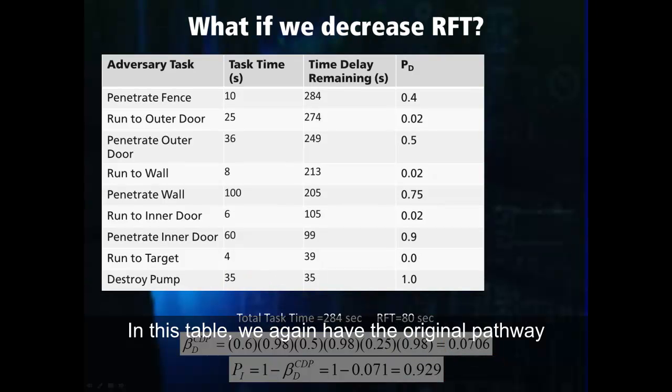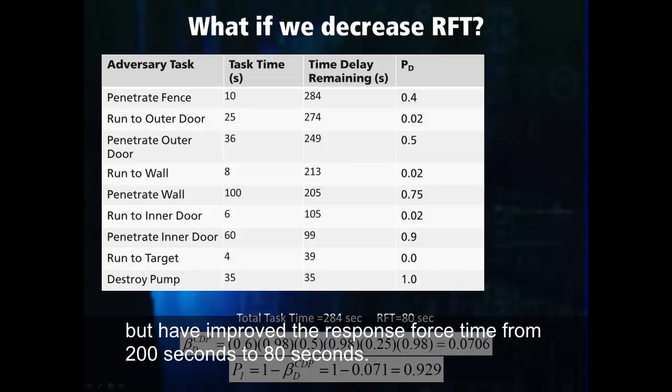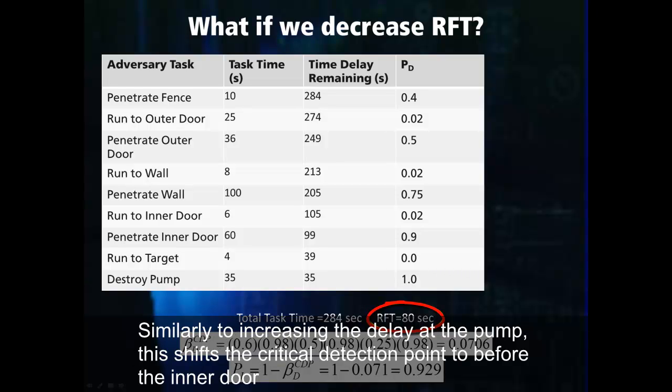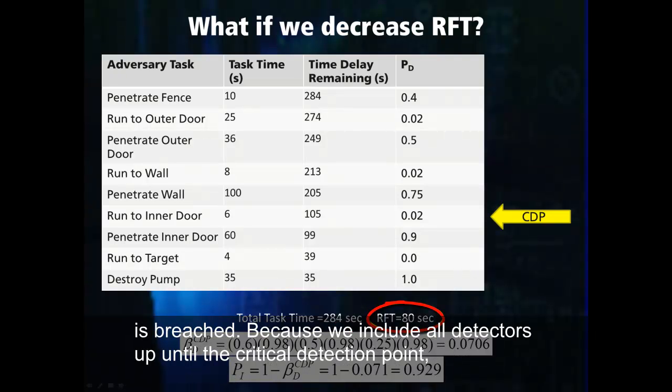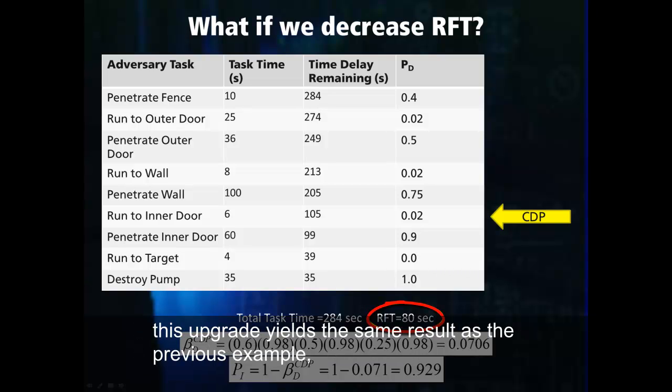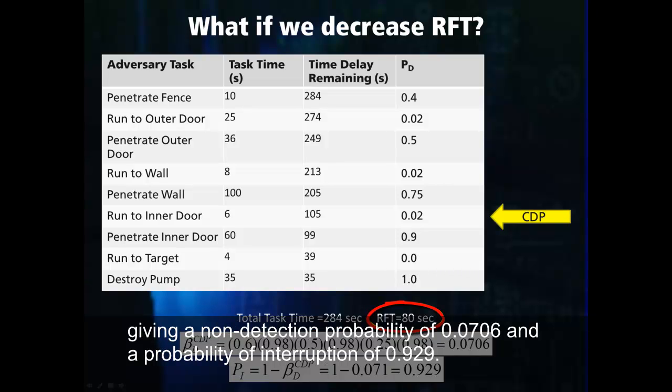In this table, we again have the original pathway, but have improved the response force time from 200 seconds to 80 seconds. Similarly to increasing the delay at the pump, this shifts the critical detection point to before the inner door is breached. Because we include all detectors up until the critical detection point, this upgrade yields the same result as the previous example, giving a non-detection probability of 0.0706 and a probability of interruption of 0.929.